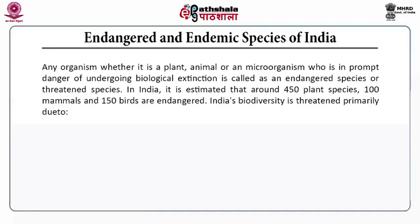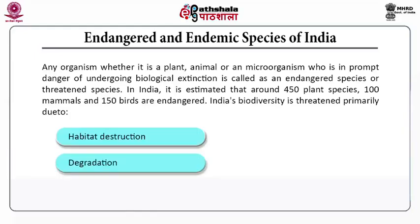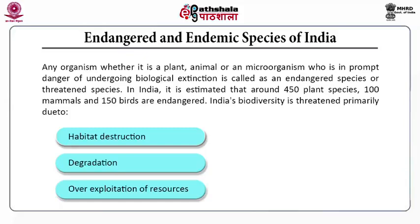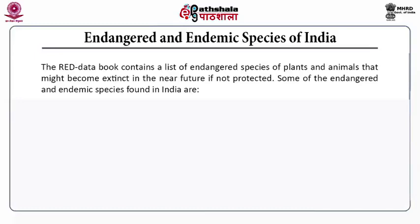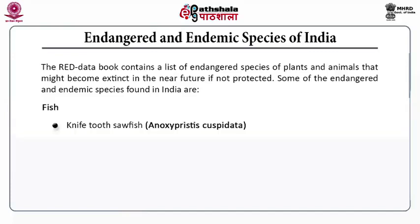India's biodiversity is threatened primarily due to destruction of habitat, degradation of habitat, and overexploitation of natural resources — all discussed in detail in Biodiversity and Environment Conservation Part 1. The Red Data Book contains a list of endangered species of plants and animals that might become extinct in the nearby future if not protected. Some of the endangered and endemic species found in India include fish.